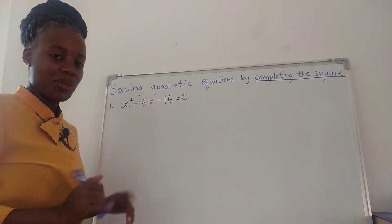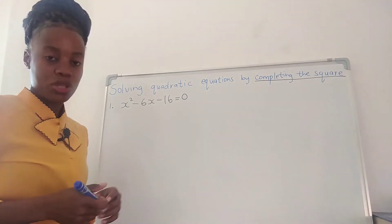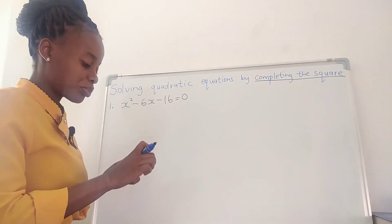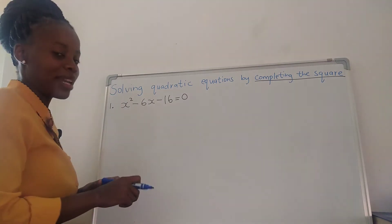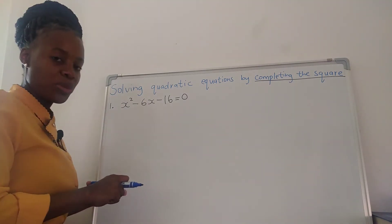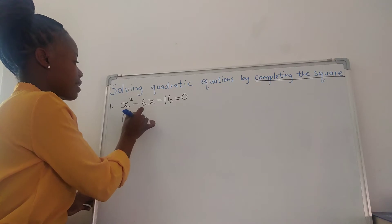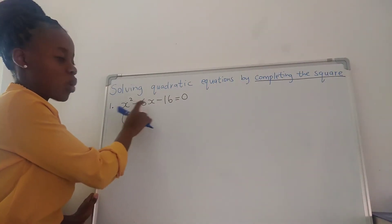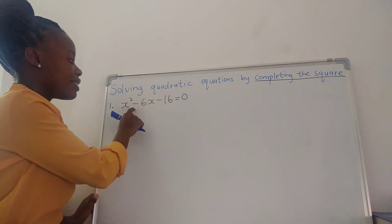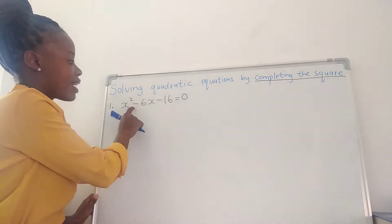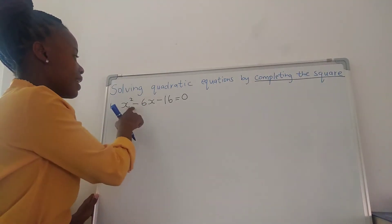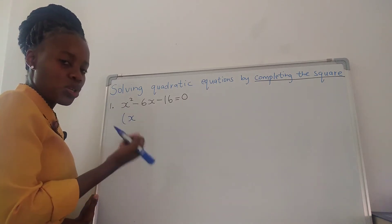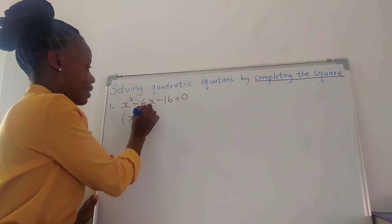If it's like this, it's easy. So we have x squared minus 6x minus 16 equals to 0. We're going to complete the square. You start by writing x. After x, you have the coefficient of x. The coefficient of x here is negative 6. So you divide negative 6 by 2, and you're going to get 3. So x minus 3.